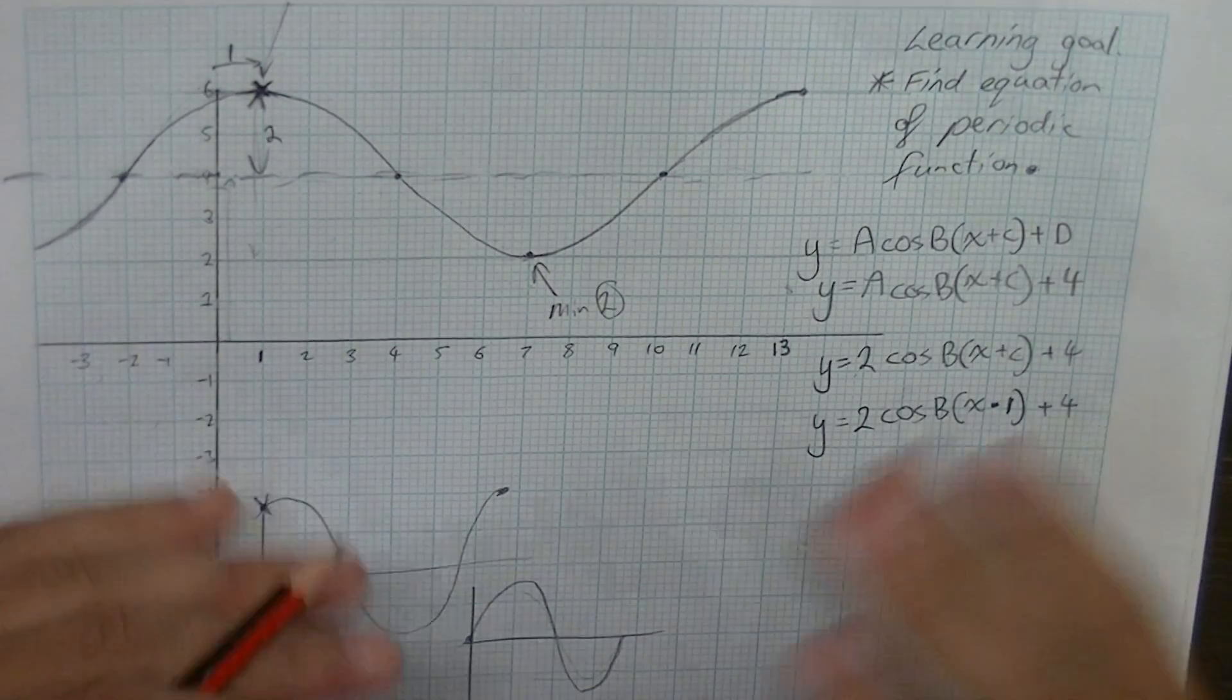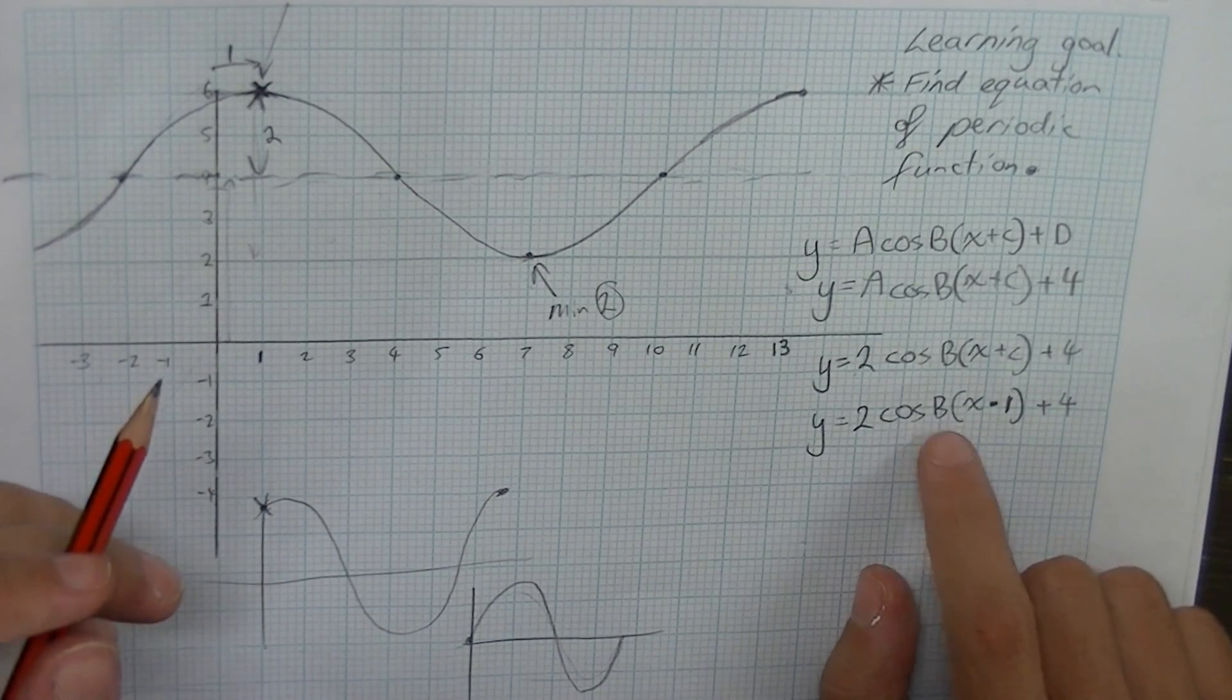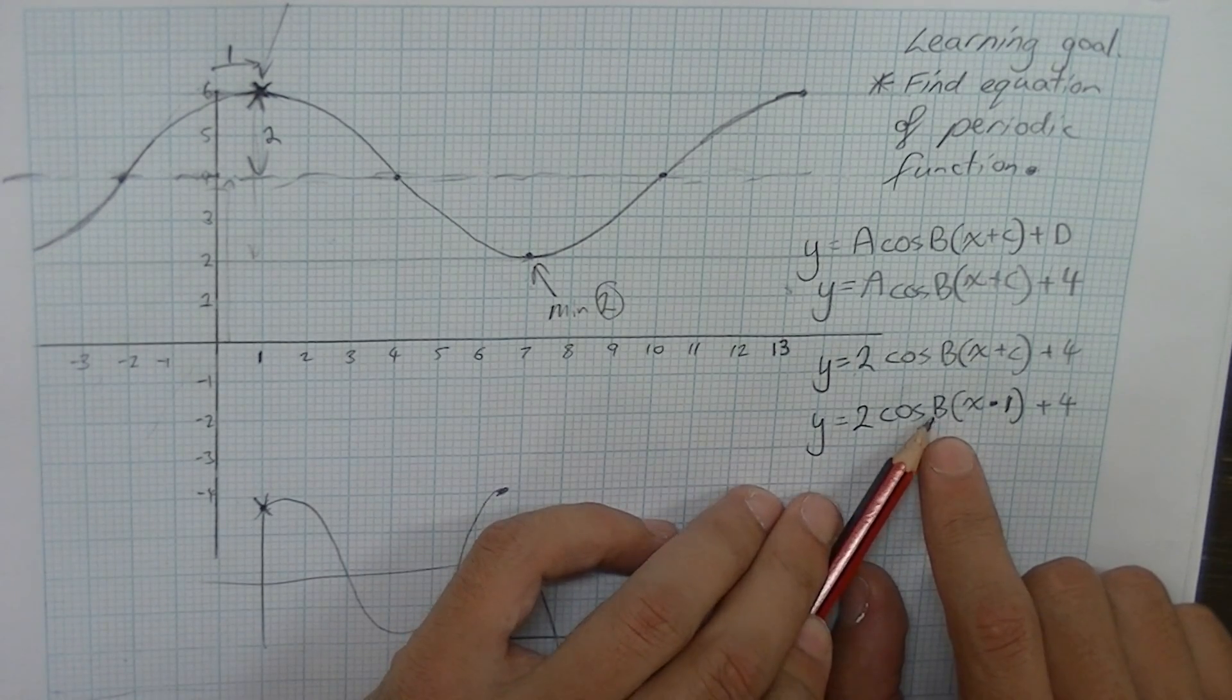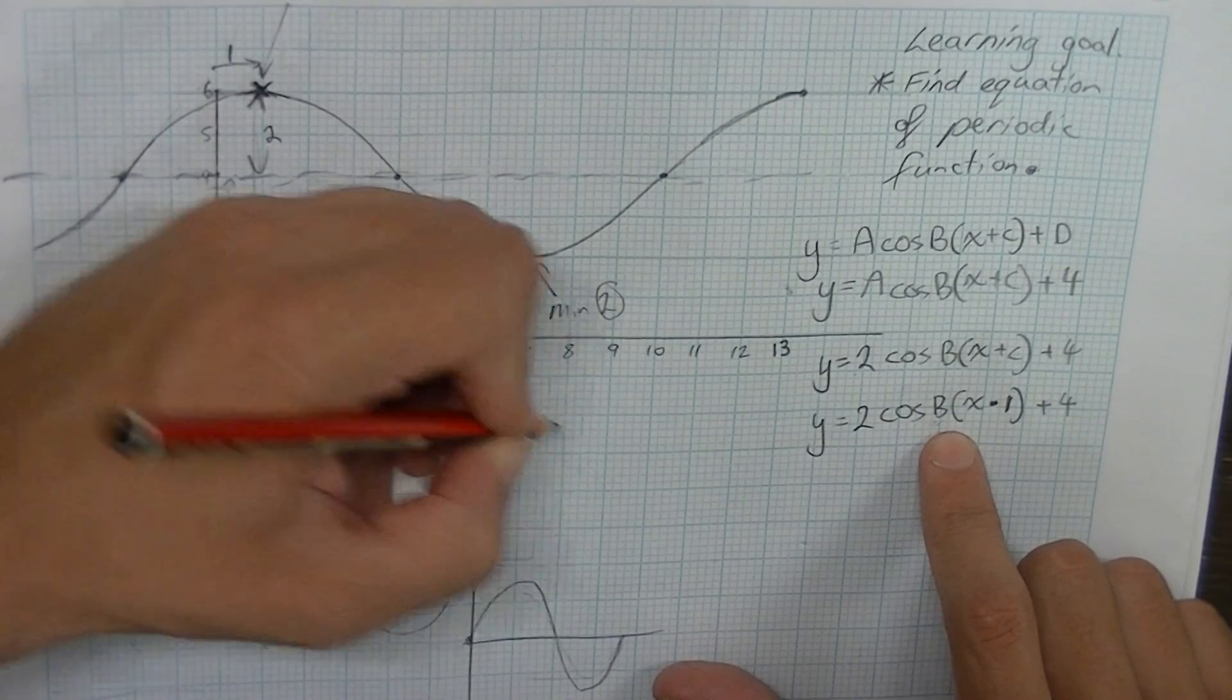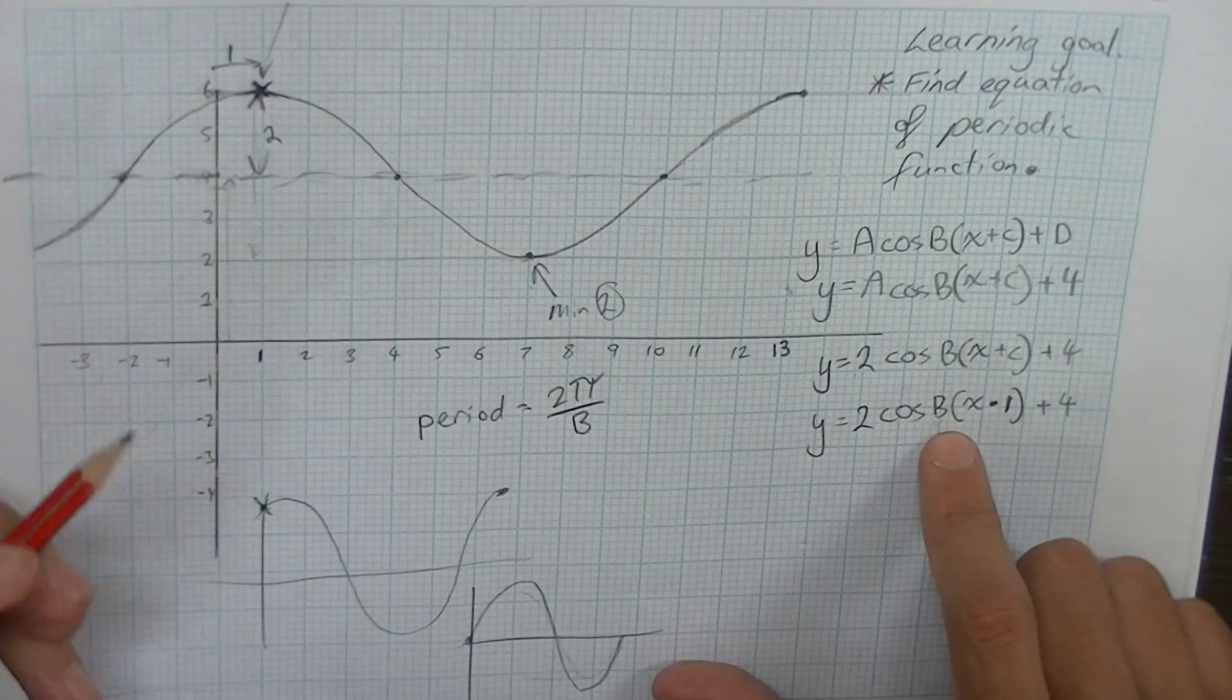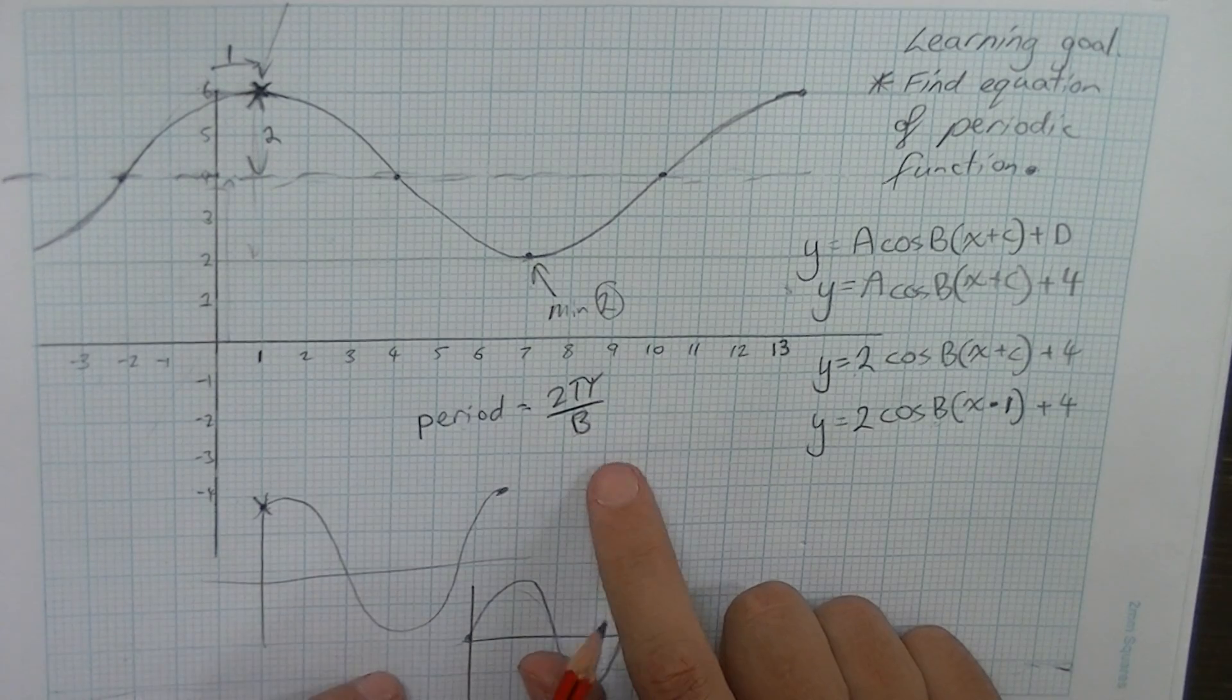Okay, finally, this part, this is really the only bit that requires any real maths. We need to find out what our b value is. Now remember that when it comes to our b value, the way that we solve for our b value is with this formula. Period equals 2 pi divided by b. So period equals 2 pi divided by b. That's going to be our formula.